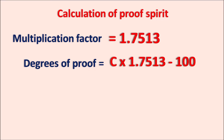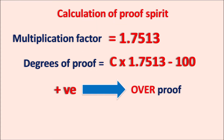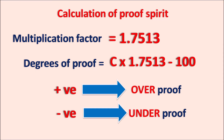If the result is greater than 100, it gives a positive value, indicating the alcoholic solution is overproof — meaning it has a higher concentration than 57.1% v/v. Similarly, if we get a negative value, it indicates the solution is underproof, meaning the concentration is less than 57.1% v/v. So overproof and underproof simply indicate whether the concentration is above or below 57.1%.